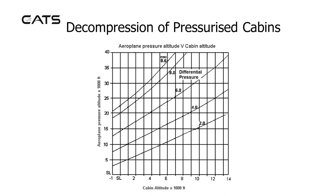If the differential pressure was reduced to say 4,000 feet due to some limitation, and you still wished to maintain a cabin altitude of 5,000 feet, you would only be able to fly at 15,000 feet.